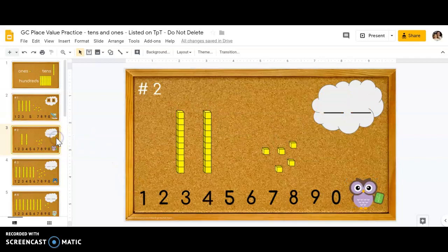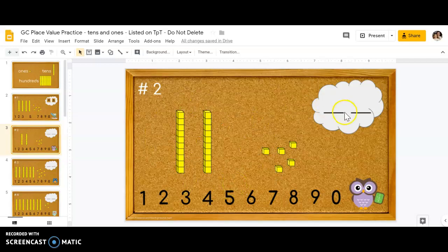Let me show you the other way. The other way is to count all of the blocks together and then make the number up there in the cloud. So I can go ten, twenty, twenty-one, twenty-two, twenty-three, twenty-four, twenty-five.